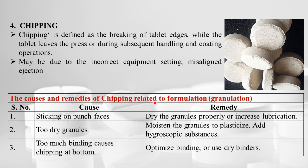Causes and remedies of chipping related to formulation: if granulation is sticking on the punches, dry the granules properly or increase lubrication. If granulation is too dry, moisten the granules to plasticize and add hygroscopic material. Too much binding also causes chipping at the bottom — optimize the amount of binder or use a dry binder.